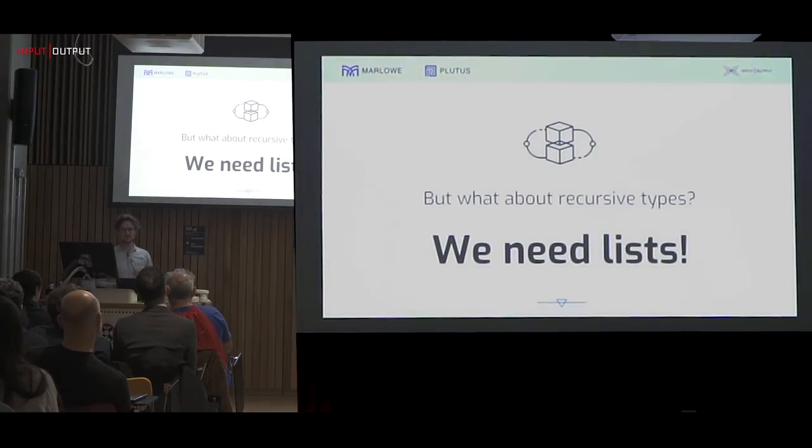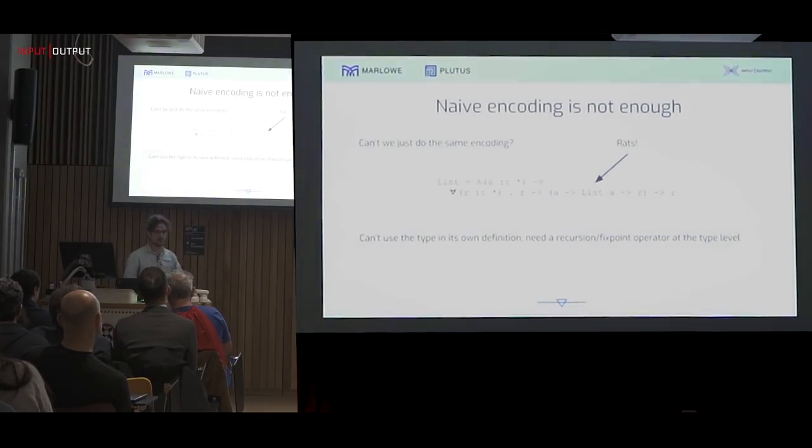But what about recursive types? We really, really want recursive types. I don't know if you've ever tried programming without lists, but it sucks. You can't do anything interesting when you've got a variable amount of data. So we want to do that. But we can't just crank the handle. You know, if you just write out your definition, you've used the thing that you're defining. You can't just do that. You have to have some way of tying the knot of having some kind of recursion or fixed point combinator at the type level. Otherwise, this is just defining some infinite thing that's not going to make you happy.